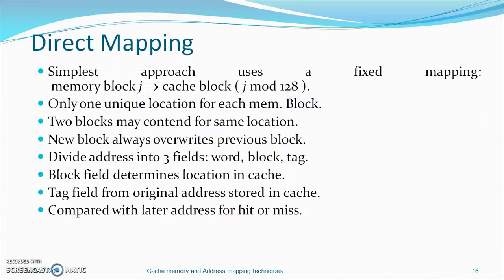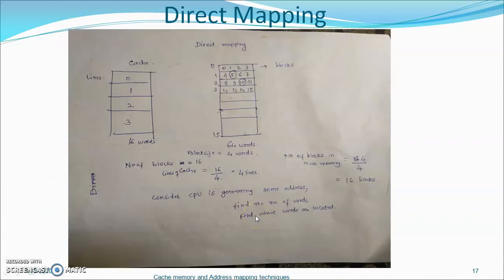Direct mapping is the simplest approach. It uses a fixed mapping where memory block j is mapped onto cache block j mod 128. The address is divided into three fields: word, block, and tag. The block field determines the location in the cache; the tag field determines the original address stored in the cache and is compared with tag addresses for a hit or miss.